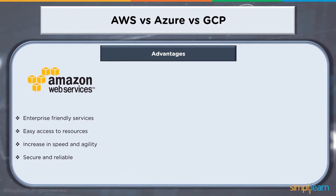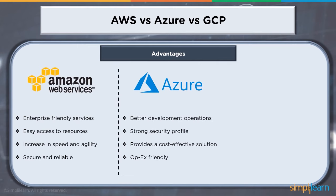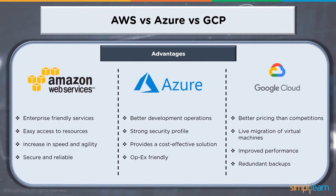When it comes to advantages: AWS has enterprise-friendly services, easy access to resources, increased speed and agility on demand, and takes care of security and reliability. Azure has better development operations, strong security profile, cost-effective solutions, and operation execution friendly. Google Cloud's key features include better pricing than competitors, live migration of virtual machines, improved performance, and redundant backups.